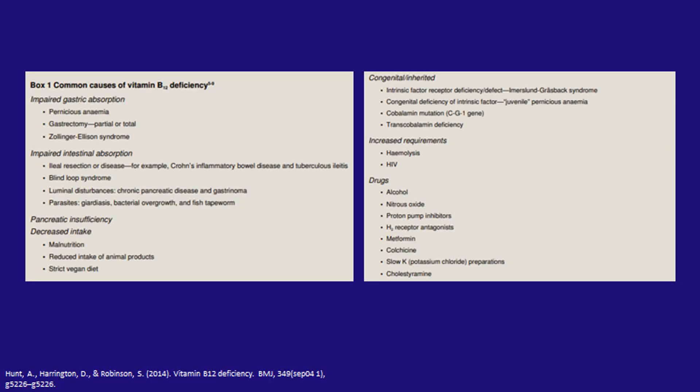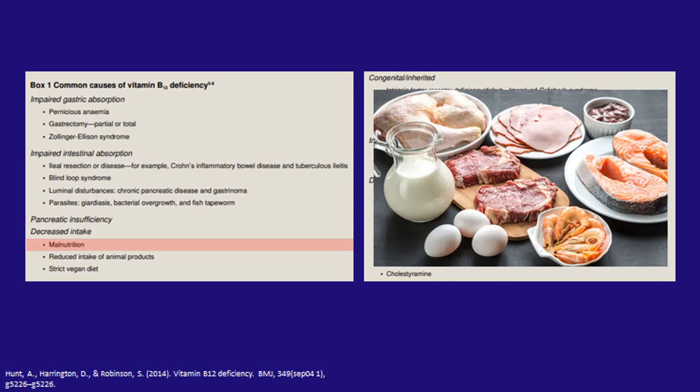Of these, B12 deficiency is one that I find particularly interesting because I see risk factors for it in many of my patients. Fat phobia means that a lot of people come to me consuming plant-based diets, which are essentially deficient in B12. So vegetarian and vegan diets place people at very high risk for B12 deficiency.